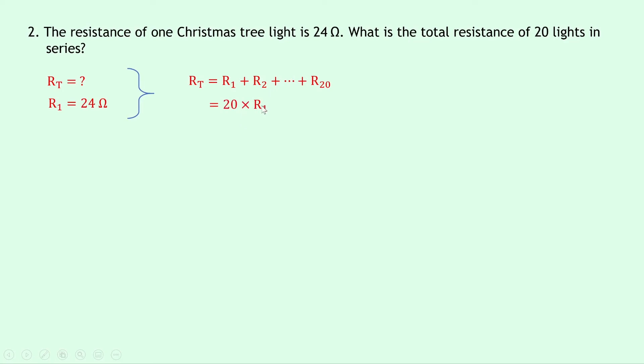So adding all the resistances up 20 times is the same as 20 times R1. So we can now do 20 times 24, and if you put that into your calculator you should get an answer of 480 ohms.